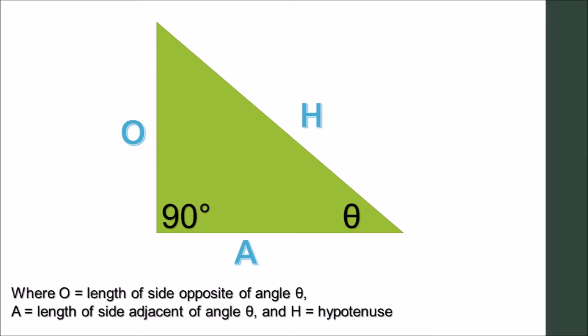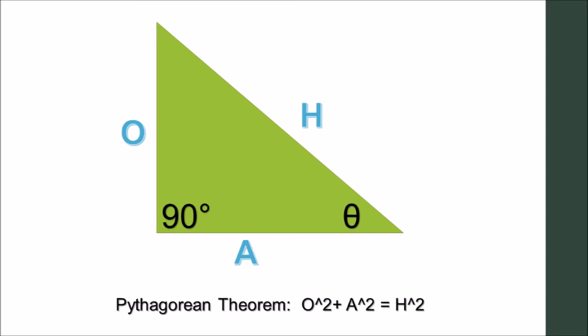We'll use two simple mathematical facts. The Pythagorean theorem, which states that O² + A² = H². And the trigonometric definitions of sine and cosine.